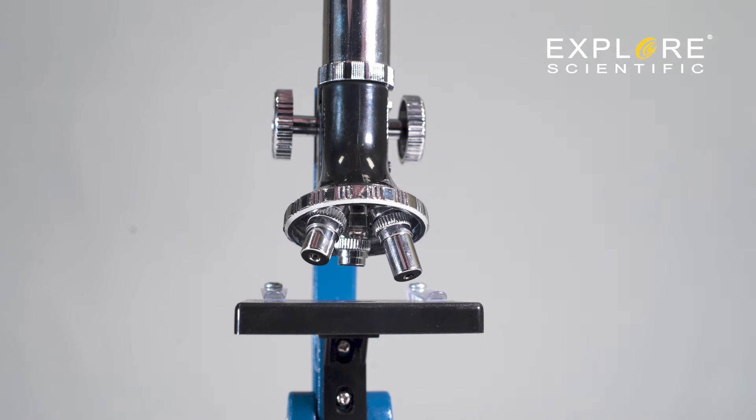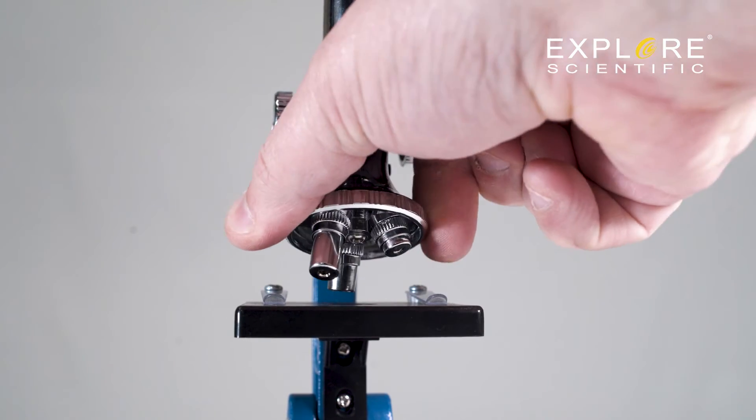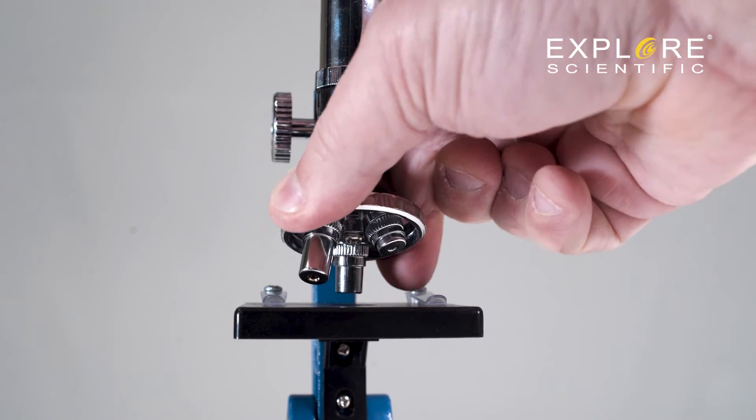The turret holds three lenses with the smallest lens being the least powerful. The turret should easily turn, allowing for higher and lower magnification lenses to be positioned over the specimen.